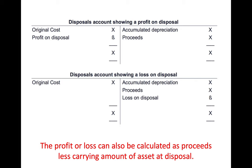A quick way to calculate the profit or loss on disposal is: proceeds minus the carrying amount of the asset, which on the T-account is shown as the original cost minus accumulated depreciation, and then you deduct that figure from proceeds.